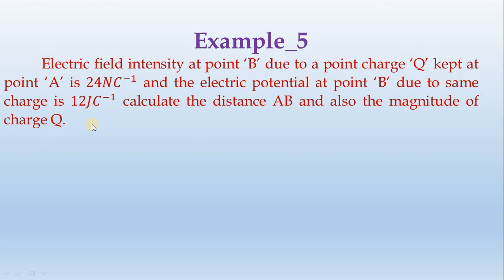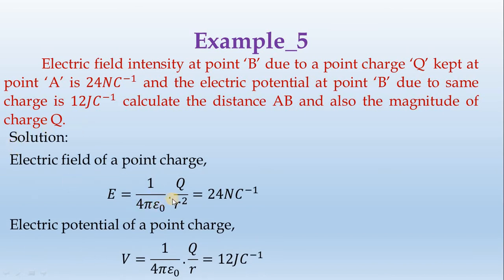If we know the electric field, we know the electric field formula. Electric field is equal to 1 divided by 4 pi epsilon 0 into Q divided by R squared. This is the electric field, this is the electric potential. R squared, R is the major difference.